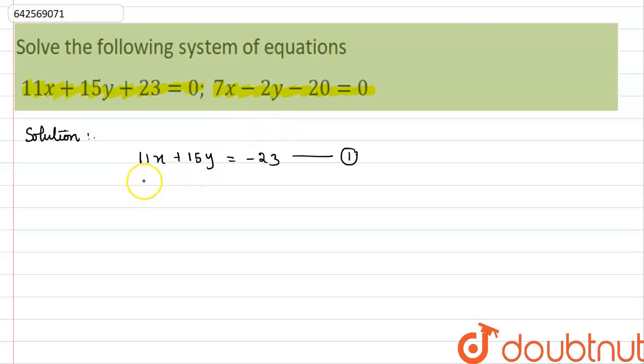The second equation can be written as 7x minus 2y equals 20. Mark this equation as 2.